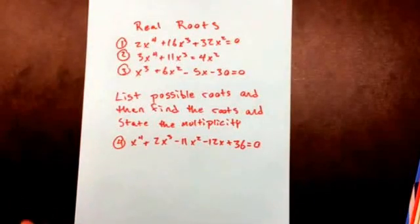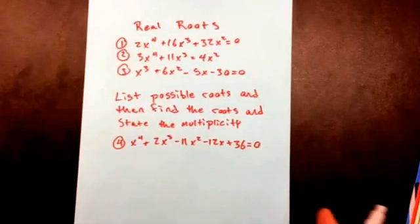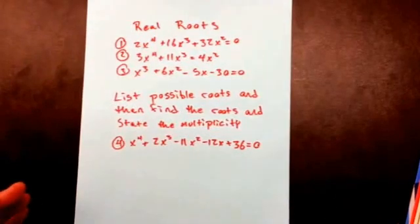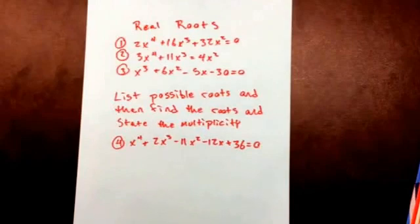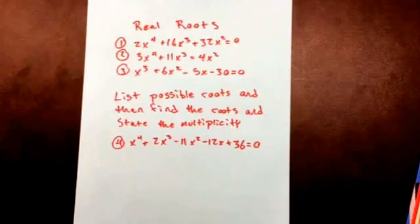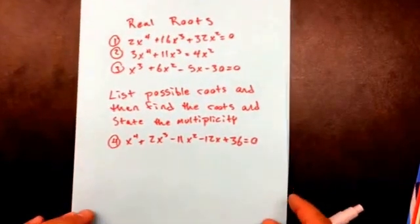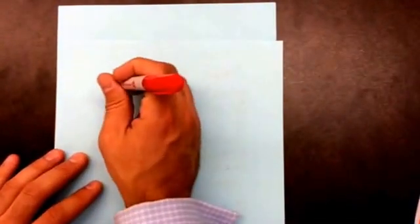I'm going to show you how to find the real roots and find possible real roots. Sometimes we can't factor because we don't know any factors to start with, and we can't do grouping or factoring a greatest common factor. When that happens, we're going to use the possible real roots. What we're going to do first is try to factor to find the roots if we can.